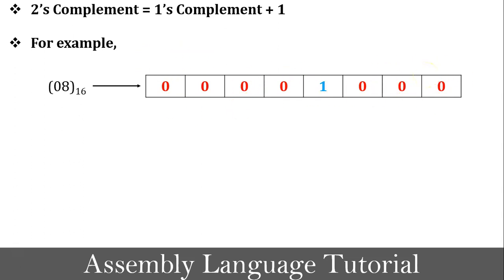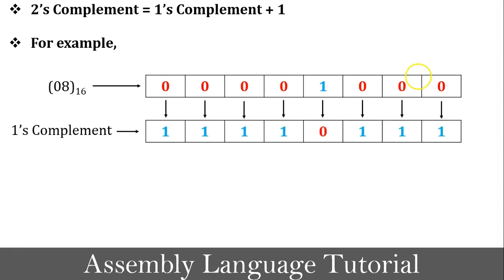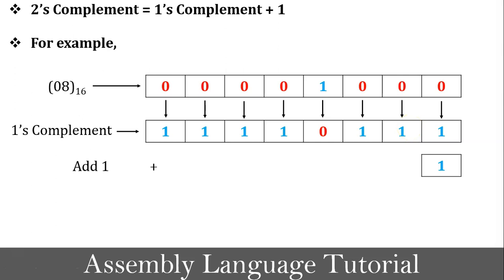As per the definition of 2's complement, the first task is to convert into 1's complement. So 1's complement of 00001000 is 11110111 — four ones, then 0, then three ones. Now add 1 to the 1's complement value.